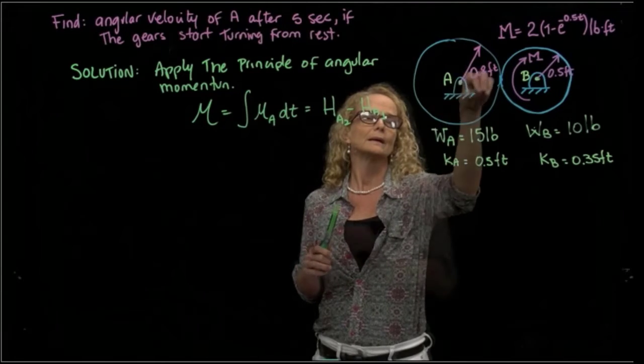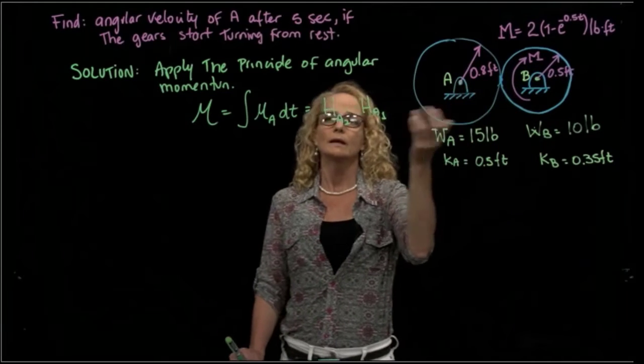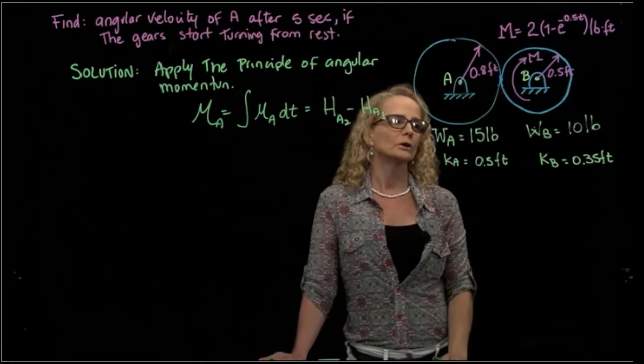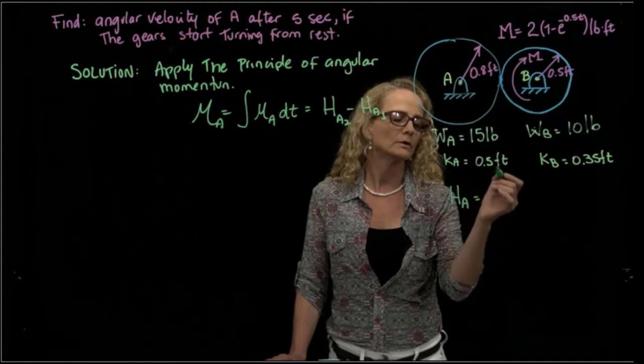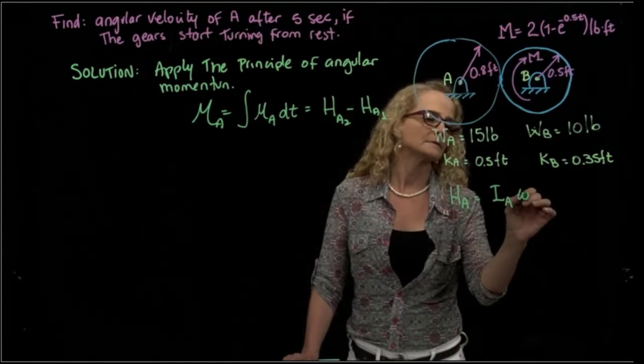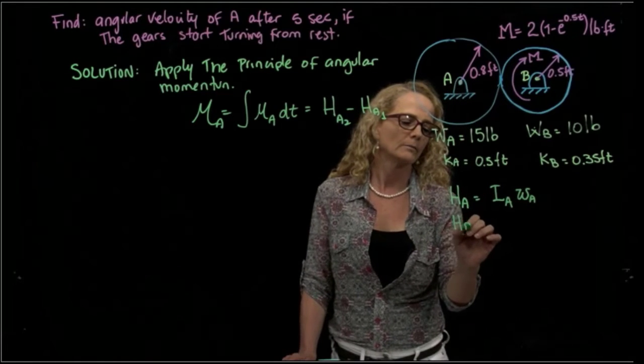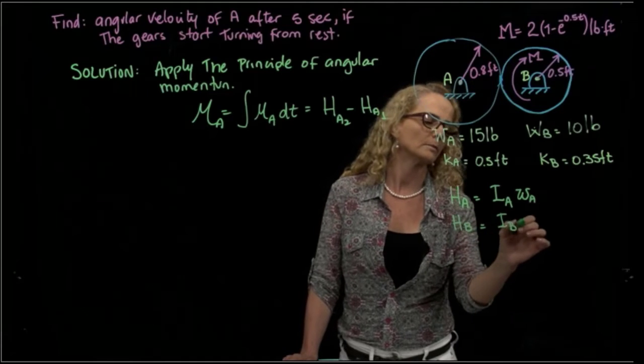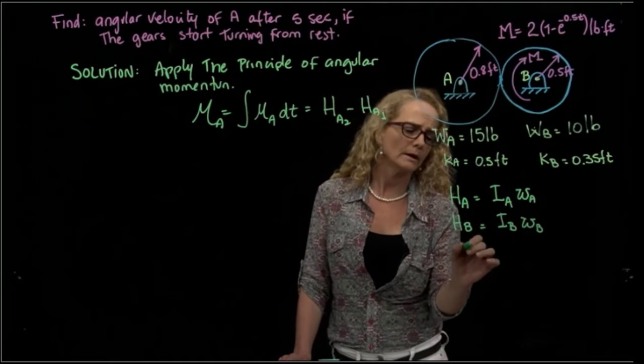A represents the center of mass of this gear and B represents the center of mass of this gear. Since we will take moment about those points, we need the inertia. Because as you recall, the definition of the angular momentum is the mass moment of inertia times the angular velocity, right? And for B will be the mass moment of inertia for B and angular velocity of B. So how much is the mass moment of inertia of A?